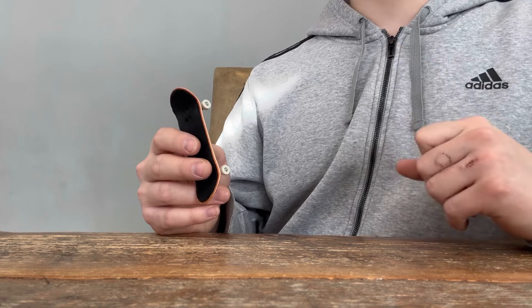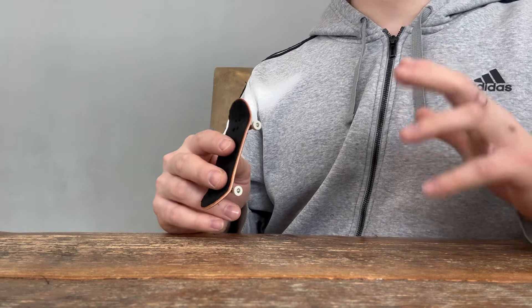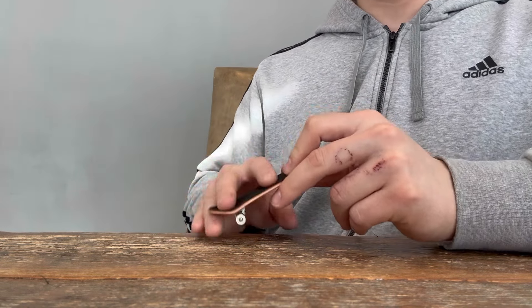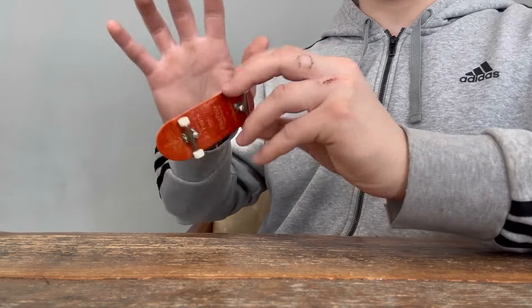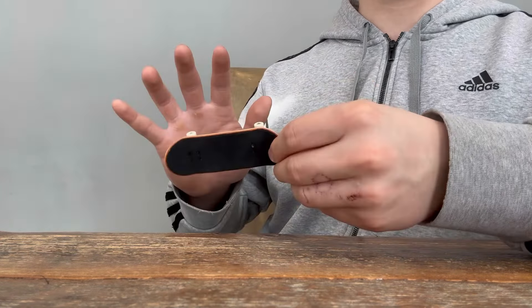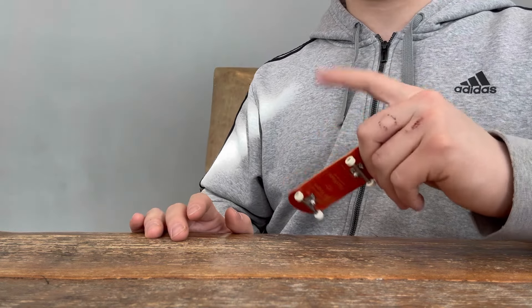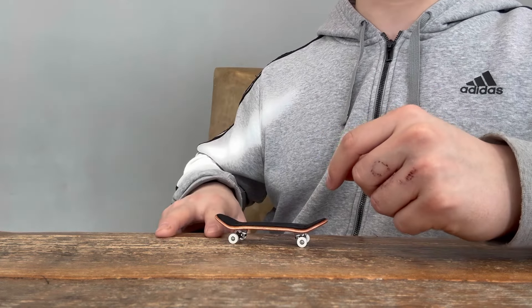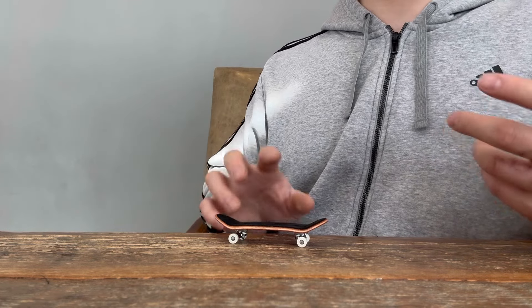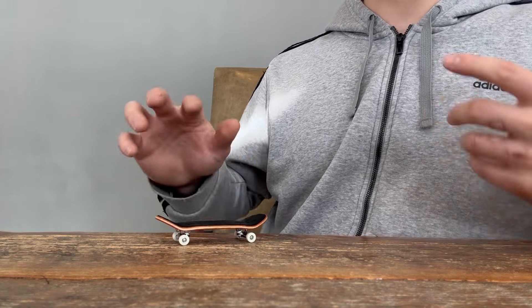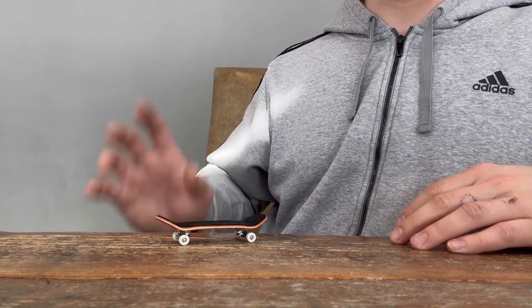Now the last thing about the kickflip is knowing when to drop your fingers and this can be a little bit difficult because sometimes when the board's rotating you kind of over rotate it or you under rotate it. The number one thing about learning this trick is always land your fingers down because if you commit to the landing you're going to develop really good skill because even if you assume it's not going to land you might land it.